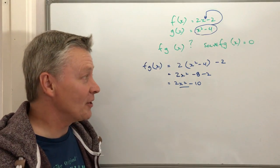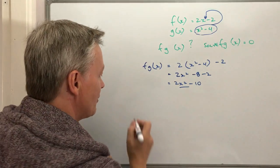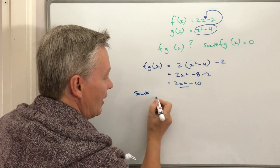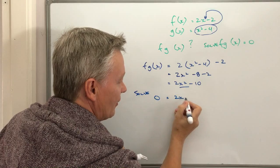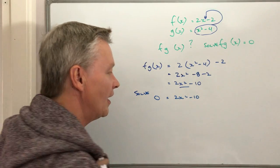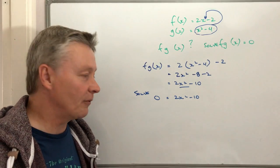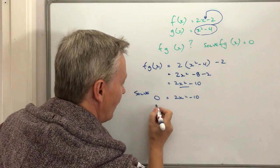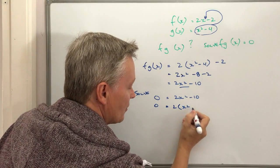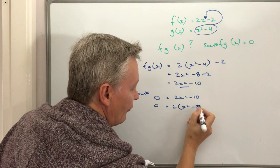The second part of the question is where they ask you to solve it. So if we're solving it, what we're doing really is factorizing 2x squared minus 10. The way I'm going to do that is I'm going to take 2 out, and I'm going to have 0 equals 2 times (x squared minus 5).